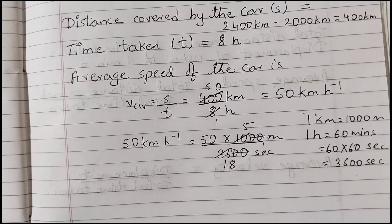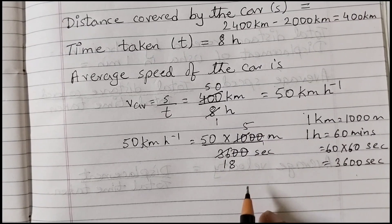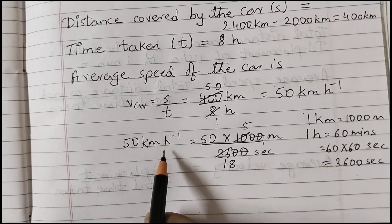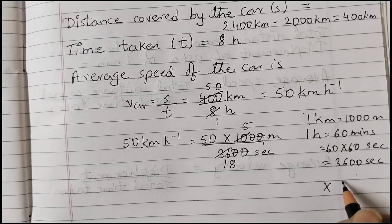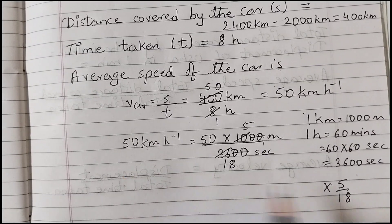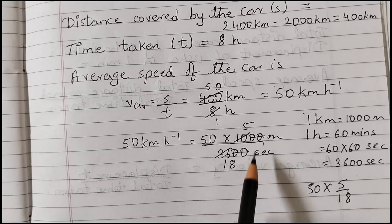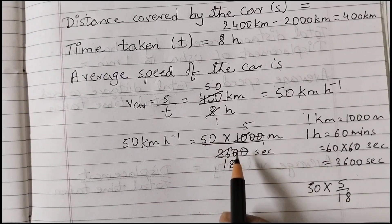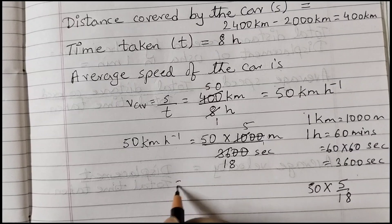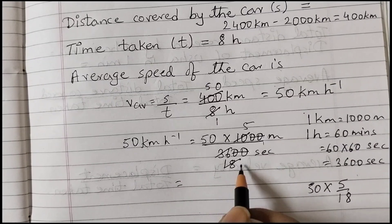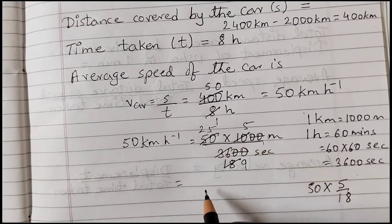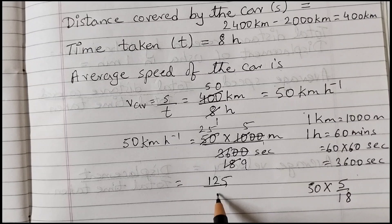A useful shortcut: to convert km/h to m/s, simply multiply by 5/18. So here it's 50 × 5/18. After canceling, 50 divided by 2 is 25, and 18 divided by 2 is 9, giving us 25 × 5 = 125, divided by 9.